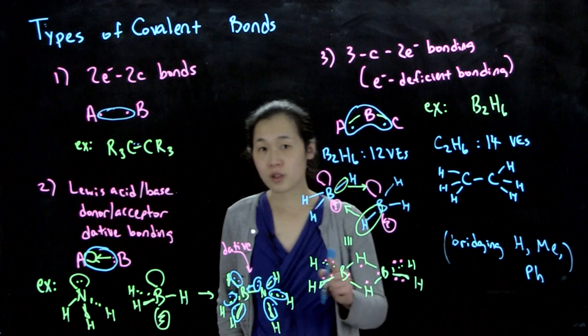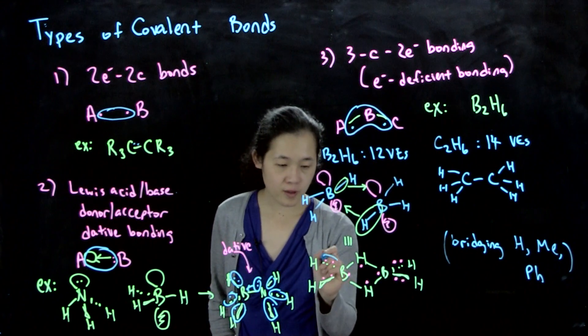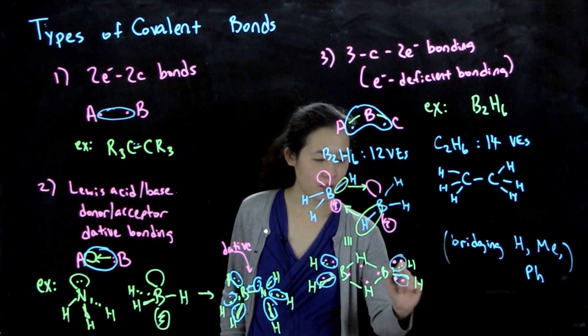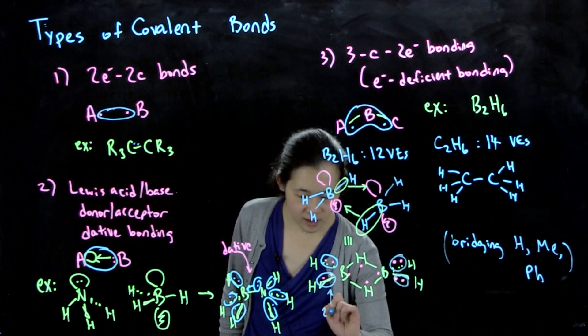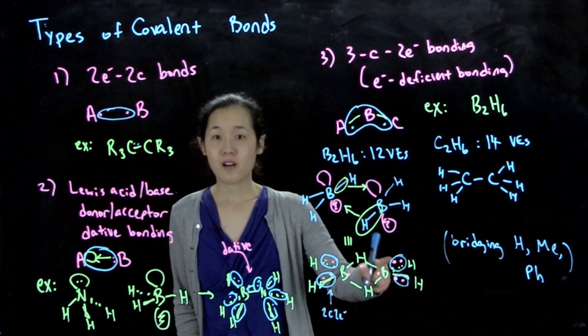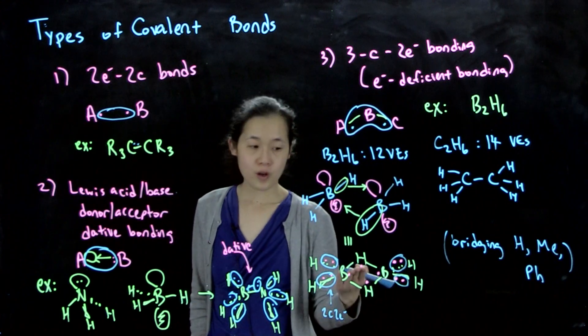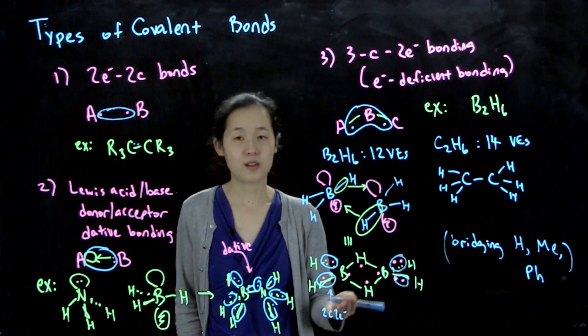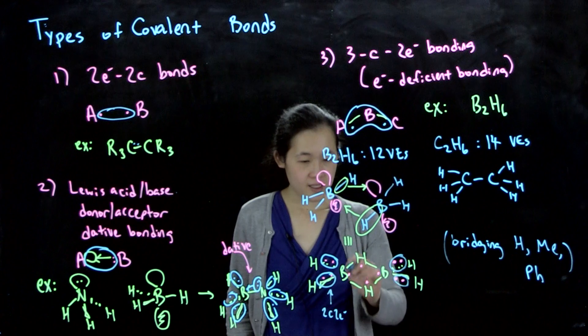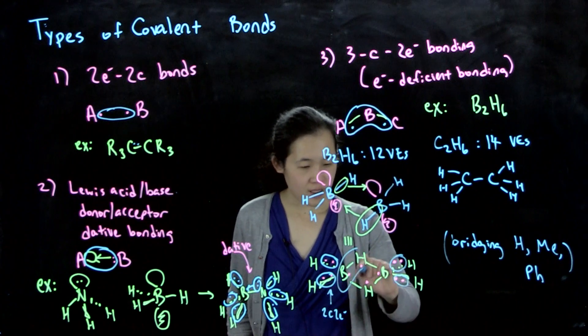We know that these terminal B-H bonds both have two electrons, one from hydrogen and one from boron. Those are normal two center two electron bonds. But here in this square of four things, we only have four electrons for four bonds, so we've got to have electron deficient bonding.